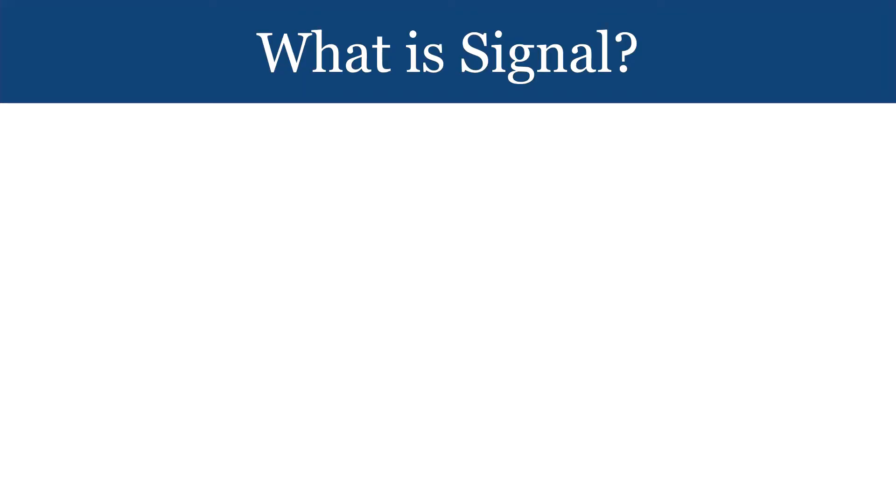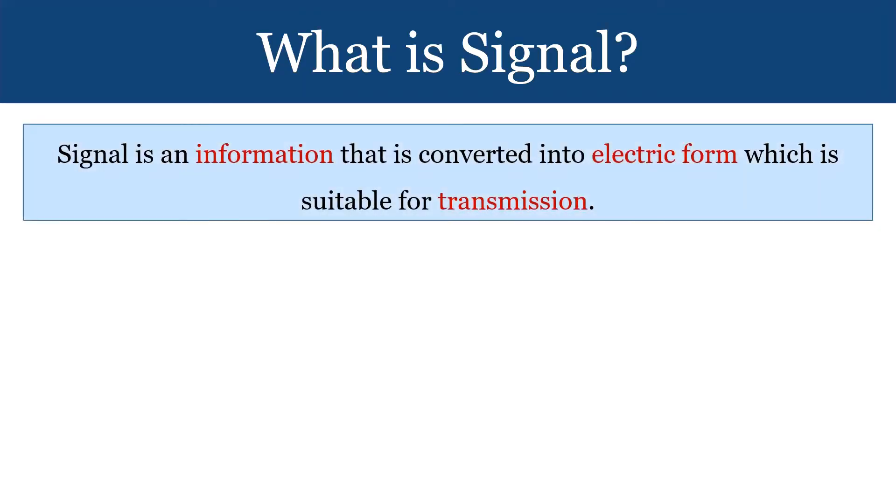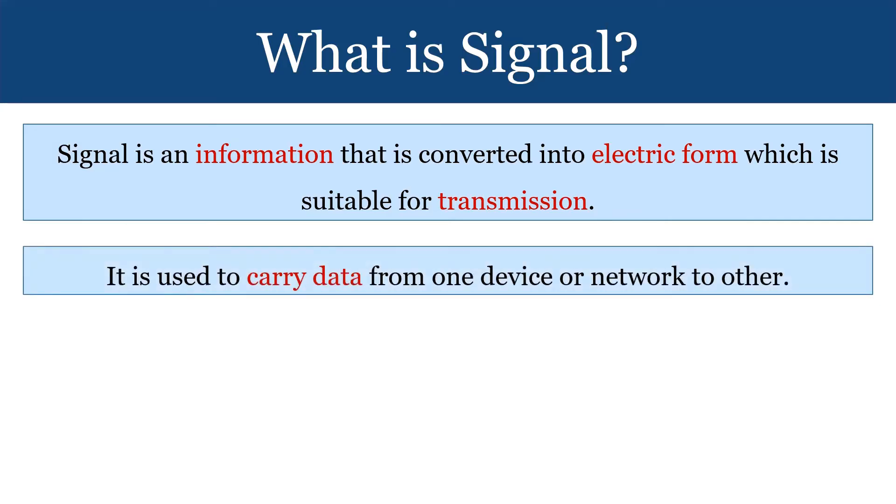So do you know what is signal? A signal is actually information that has to be transmitted from one location to another. To make this information travel, it is converted to an electric form which is suitable for transmission, and this electric form of information is referred to as signal. A signal can carry data from one device to another, from one part of a device to another part, or from one network to another.